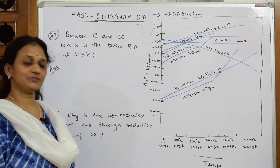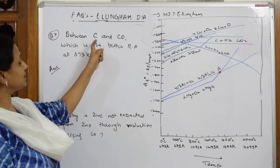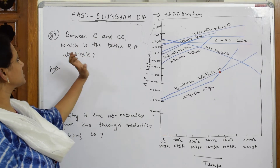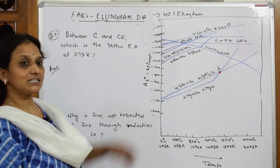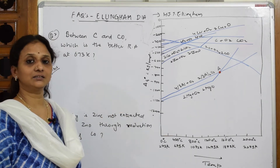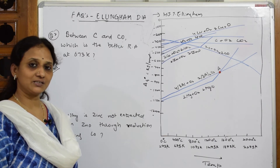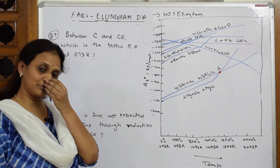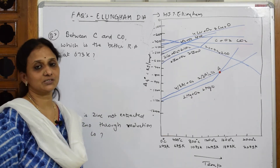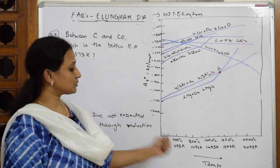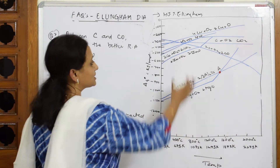Let us see one more question as we gradually go into the graph. Between carbon (C, coke) and carbon monoxide (CO), which is a better reducing agent at 673 Kelvin? We are going to calculate based on delta G° values. Delta G° is important — these are delta G° values plotted against temperature.